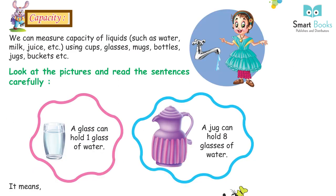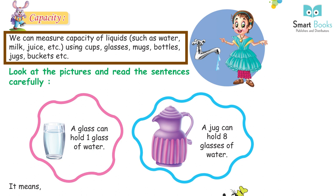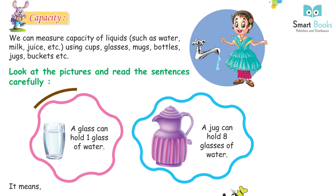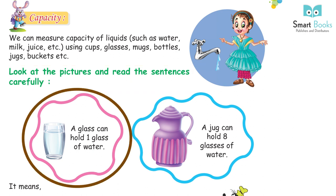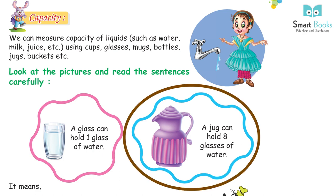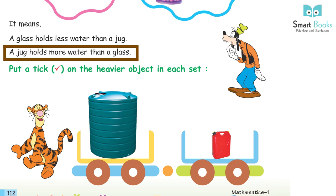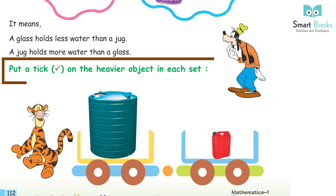Capacity: We can measure the capacity of liquids such as water, milk, juice, etc., using cups, glasses, mugs, bottles, jugs, buckets, etc. Look at the pictures and read carefully: A glass can hold one glass of water. A jug can hold eight glasses of water — meaning a glass holds less water than a jug, and a jug holds more water than a glass. Put a tick on the heavier side in each set.